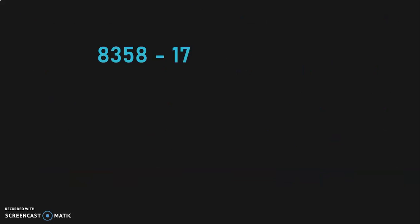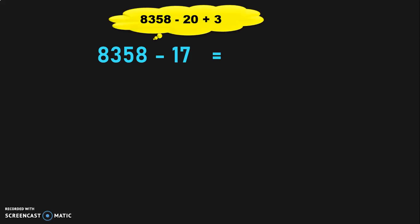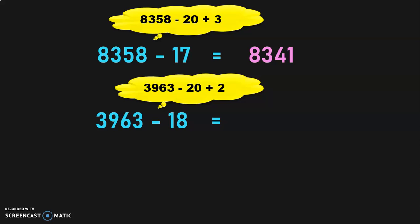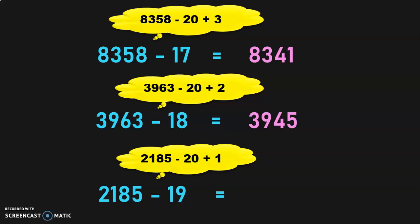Hope you enjoyed doing these sums. Let us quickly check understanding. 8,358 minus 17: do 8,358 minus 20 plus 3, which gives 8,341. Next, 3,963 minus 18: do 3,963 minus 20 plus 2. 3,963 minus 20 is 3,943, plus 2 is 3,945. Next, 2,185 minus 19: do 2,185 minus 20 plus 1. 2,185 minus 20 is 2,165, plus 1 is 2,166.